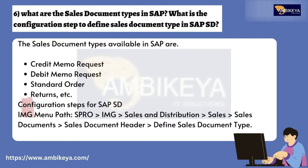Question number six: What are the sales document types in SAP, and what is the configuration step to define a sales document type? The sales document types available in SAP are: Credit Memo Request, Debit Memo Request, Standard Order, Returns, etc. The configuration path is: SPRO > IMG > Sales and Distribution > Sales > Sales Document > Sales Document Header > Define Sales Document Type.